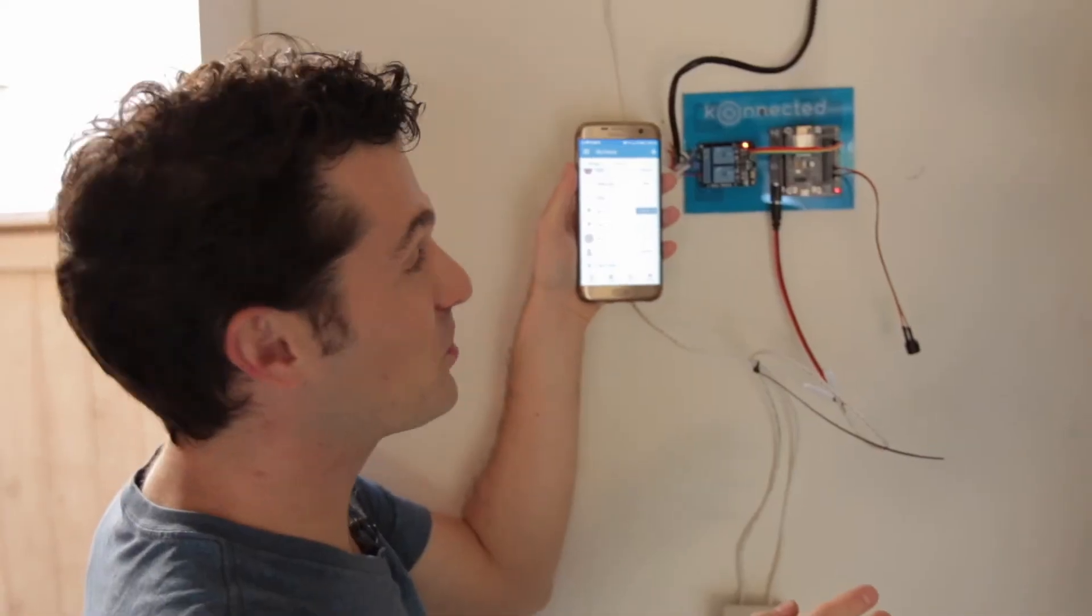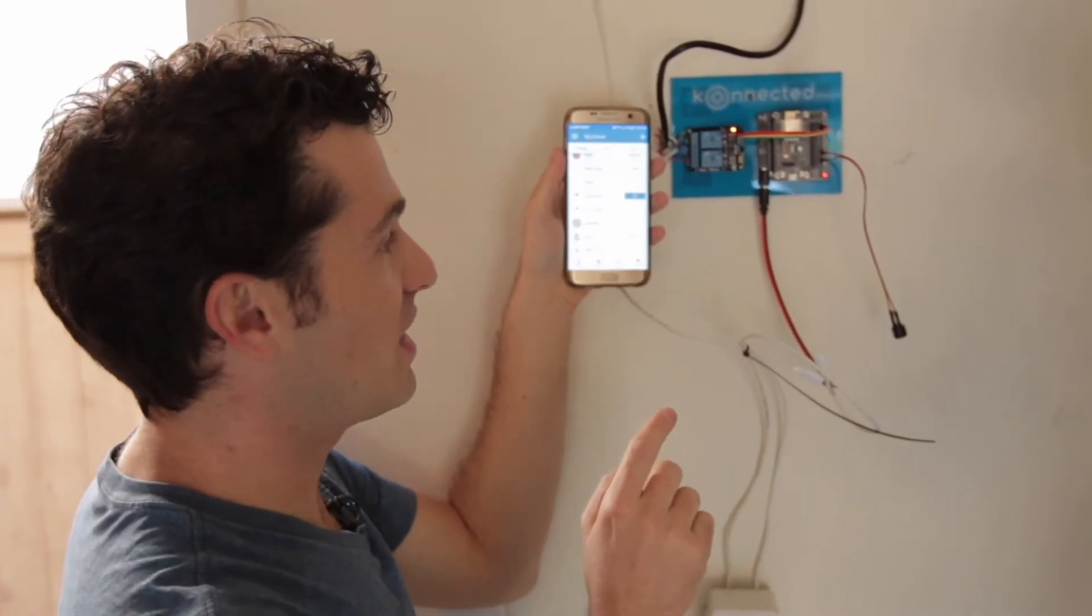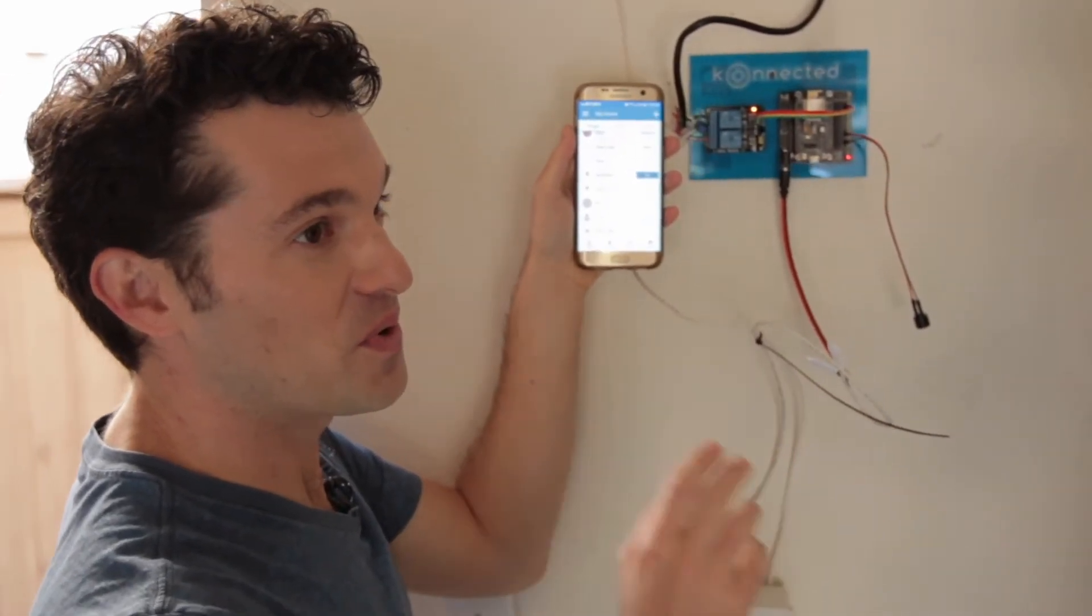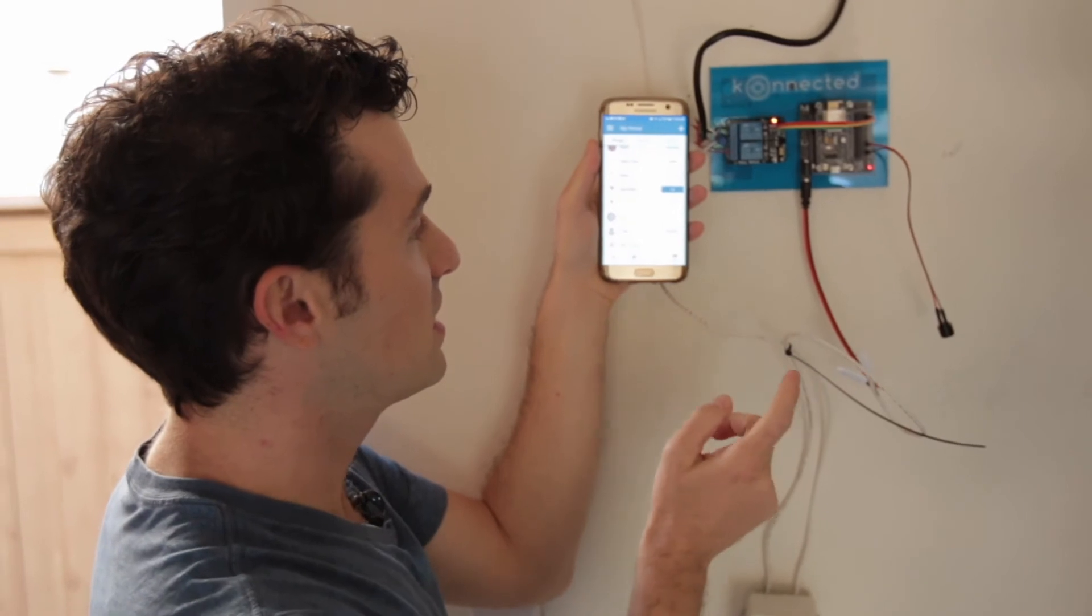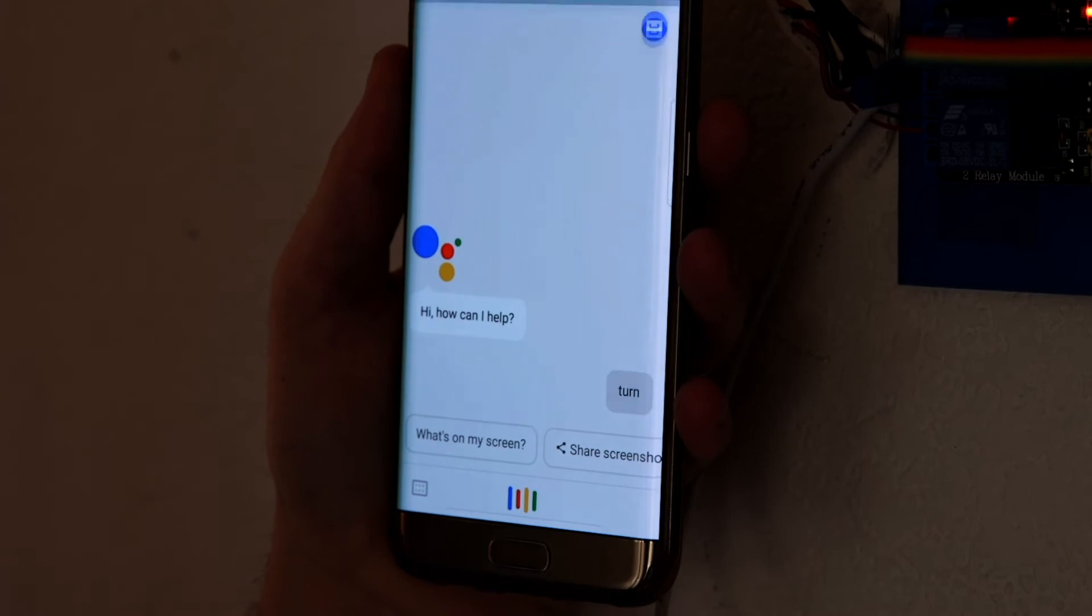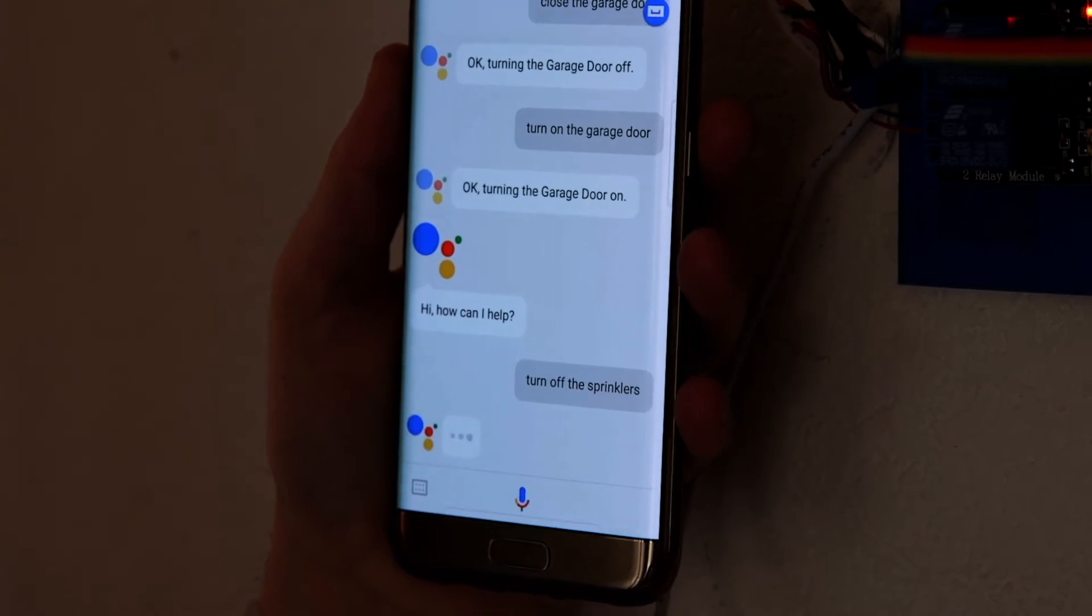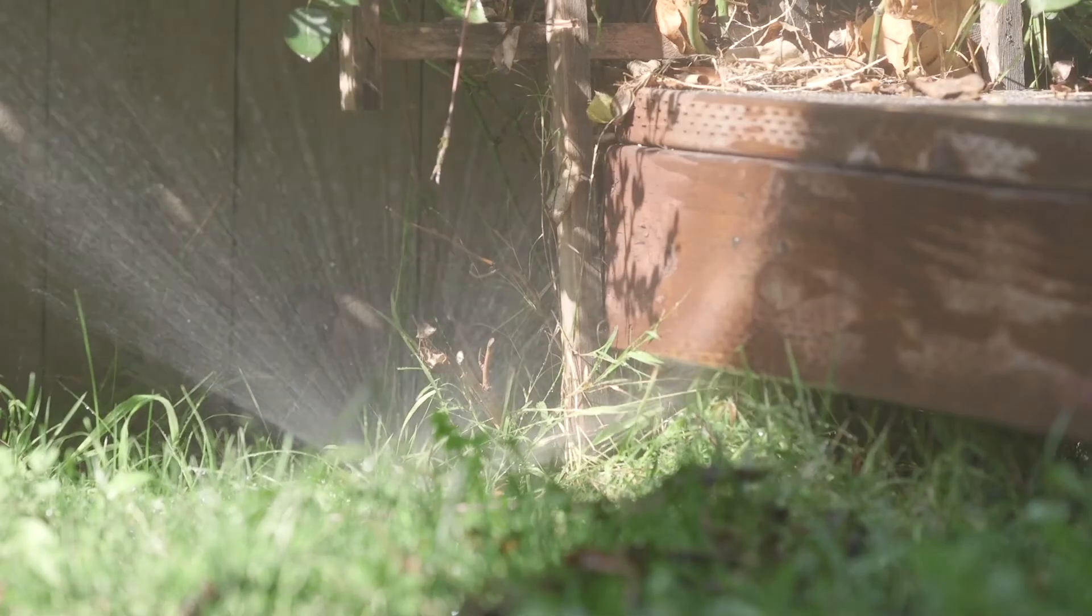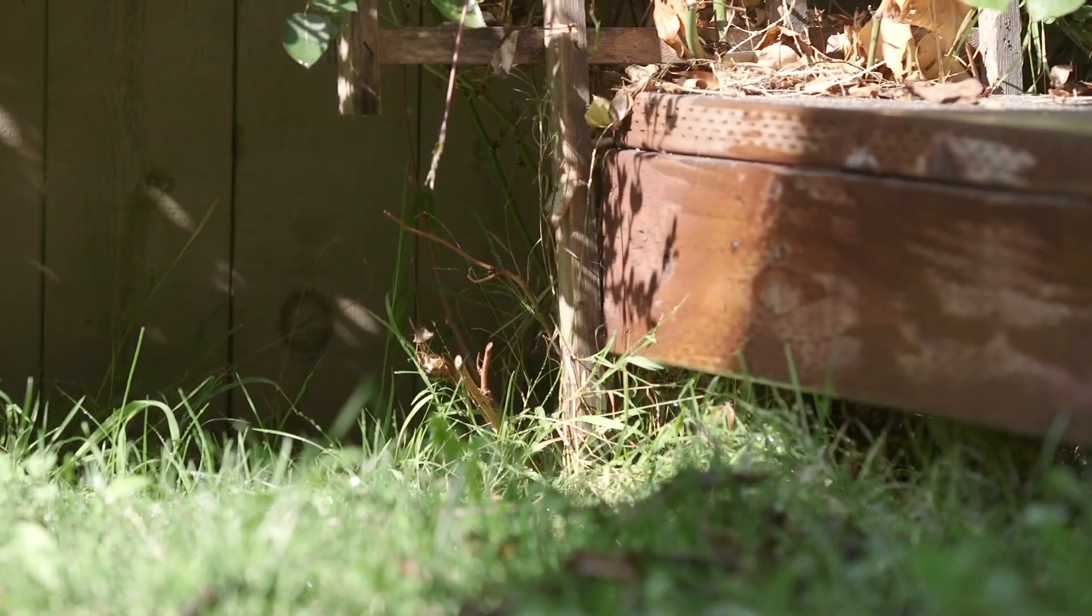Now another really cool thing is that SmartThings integrates perfectly with Google Assistant so you can do this with voice command too. So let's turn off the sprinklers. Turn off the sprinklers. Okay, turning off the sprinklers. And that's all there is to it.